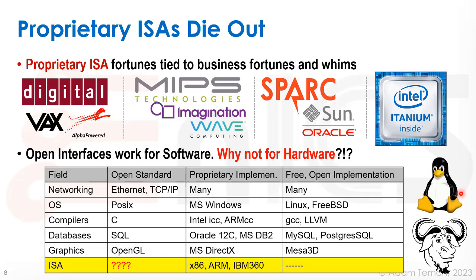Open interfaces that are not proprietary work well for software — like Linux and the GNU project. They work for networking, operating systems, compilers, databases, and graphics. But why don't they work for ISAs? There was, until recently, no open standard. We had proprietary implementations — x86, ARM, IBM 360, etc. — but no free and open implementations.